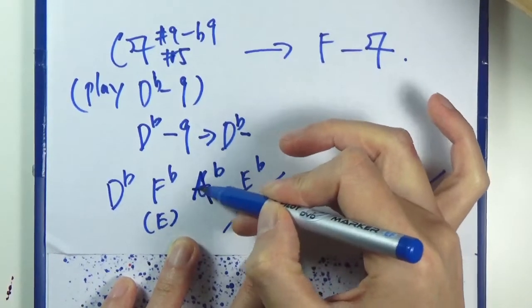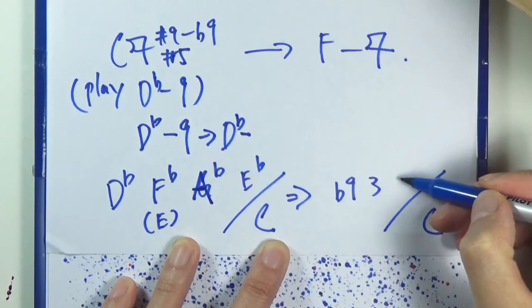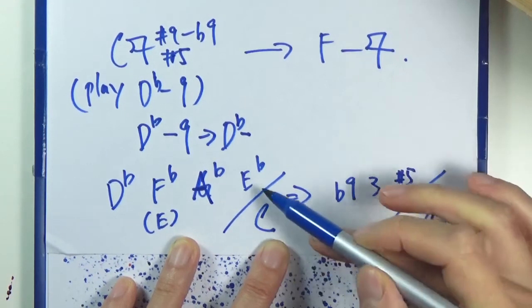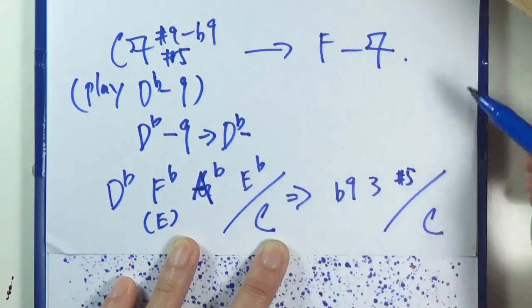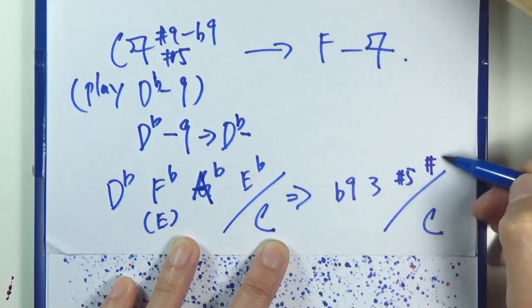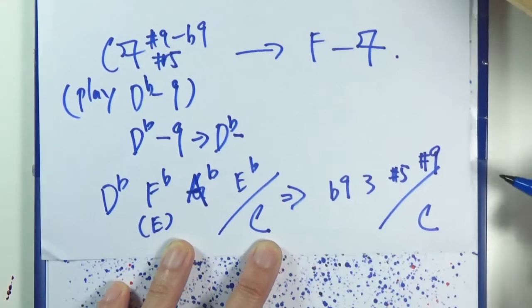And what about E-flat? E-flat is really D-sharp, right? So sharp nine. And that E-flat you can resolve down to D-flat, so it's sharp nine to flat nine.